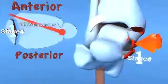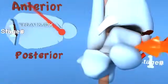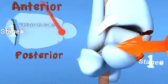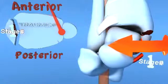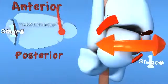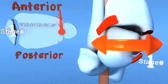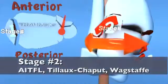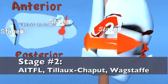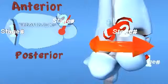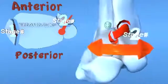As the injury progresses forward into stage 2, the talus rotates further laterally, putting tension on the anterior inferior tibial fibular ligament, resulting in either a rupture of this ligament or an avulsion fracture off the anterior portion of the fibula or tibia.